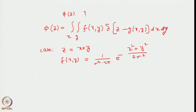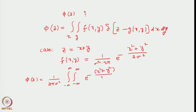Following the equation represented here, we get phi(z): it can be written as 1/(2π σ²) and the space of integration is minus infinity to infinity — so it will be a double integral of e to the power minus (x² plus y²)/(2σ²), times delta of (z minus g(x,y)), where g here is x plus y, so it is (z minus x minus y), integrated over all space.